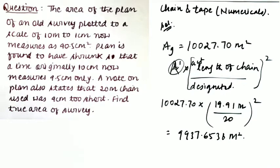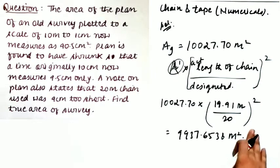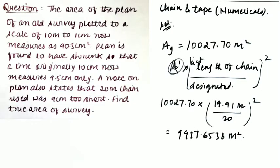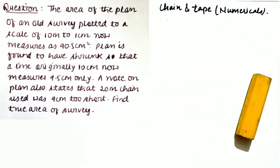So you now understand how to apply both corrections: the shrinkage correction and the standardization correction. Remember — whenever you apply the standardization correction for areas, you square the ratio; for volumes, you cube the ratio. Make changes accordingly.